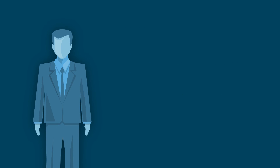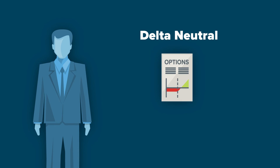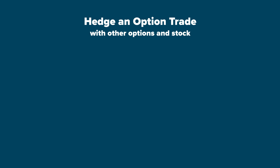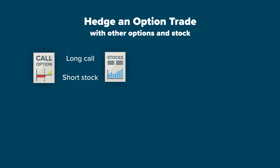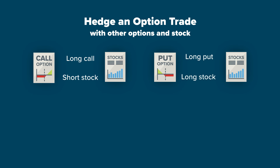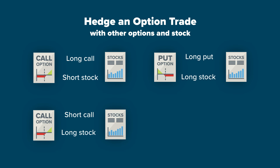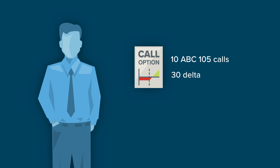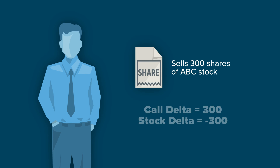Delta is an important aspect of option trading. Many option traders prefer to remain delta neutral and will hedge their option positions with the corresponding shares of stock. There are several ways to hedge an option trade, both with other options and stock, but the four most basic are: long call options can be hedged with short stock; long put options can be hedged with long stock; short call options can be hedged with long stock; and short put positions can be hedged with short stock. For example, the investor bought 10 ABC 105 calls, currently a 30 delta. The overall delta of the trade is 300. The investor then sells 300 shares of ABC stock and their position is now delta neutral.